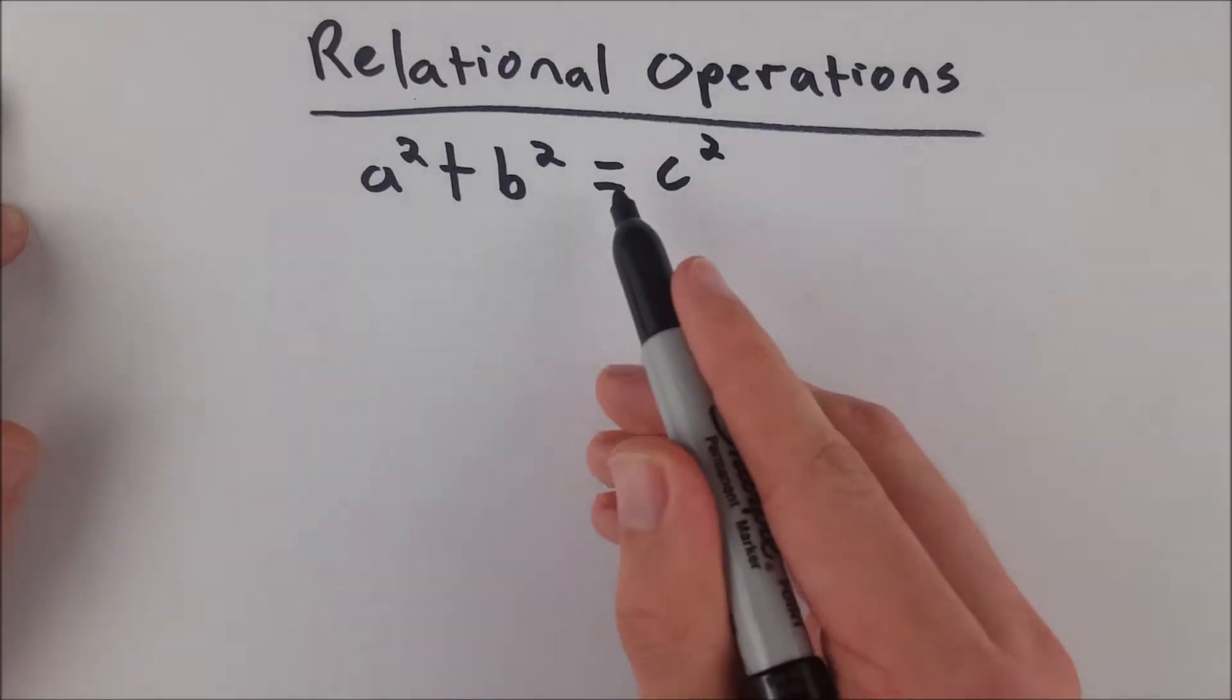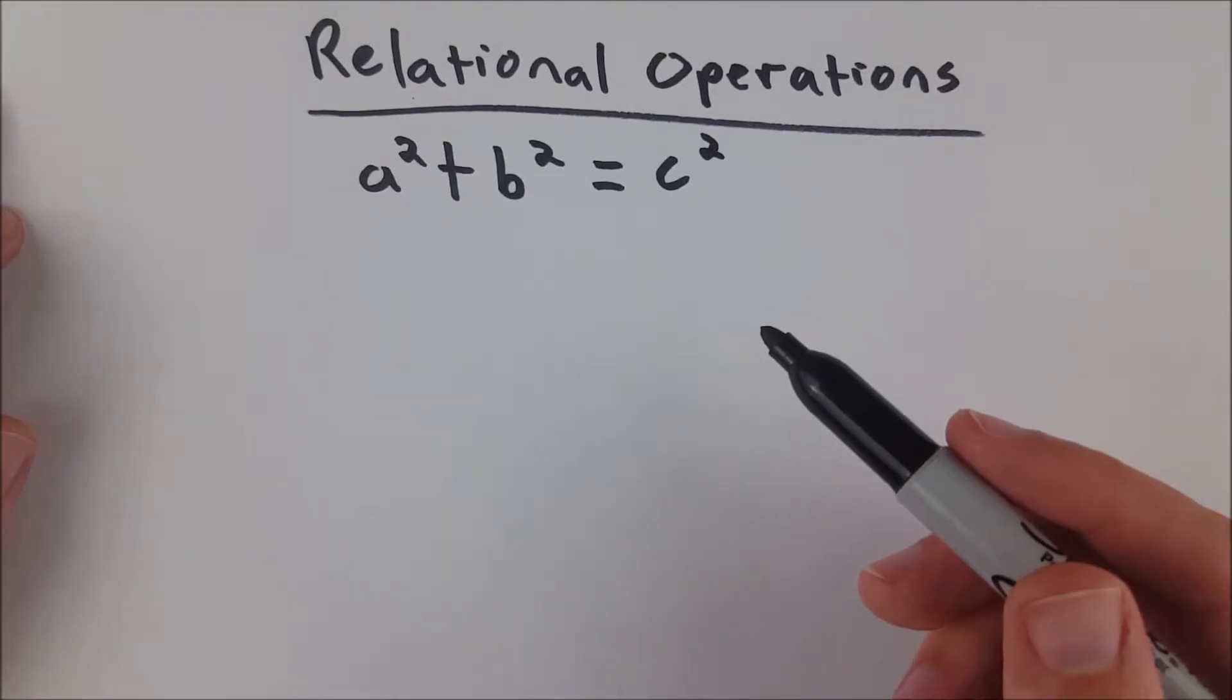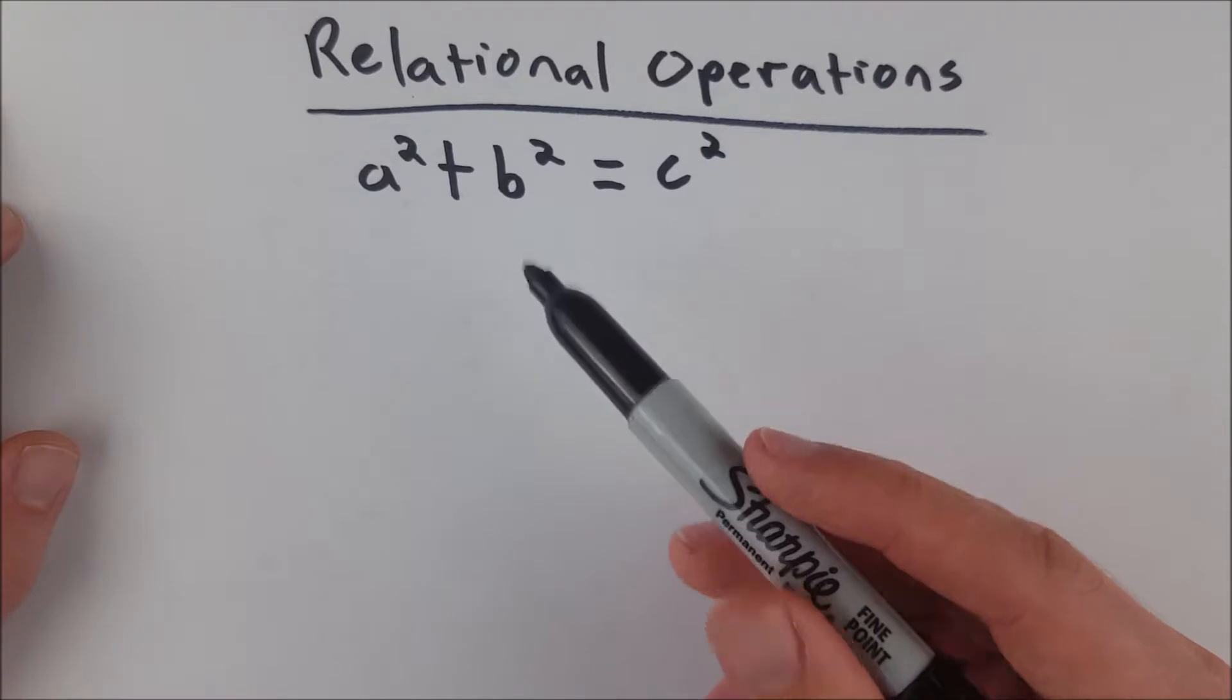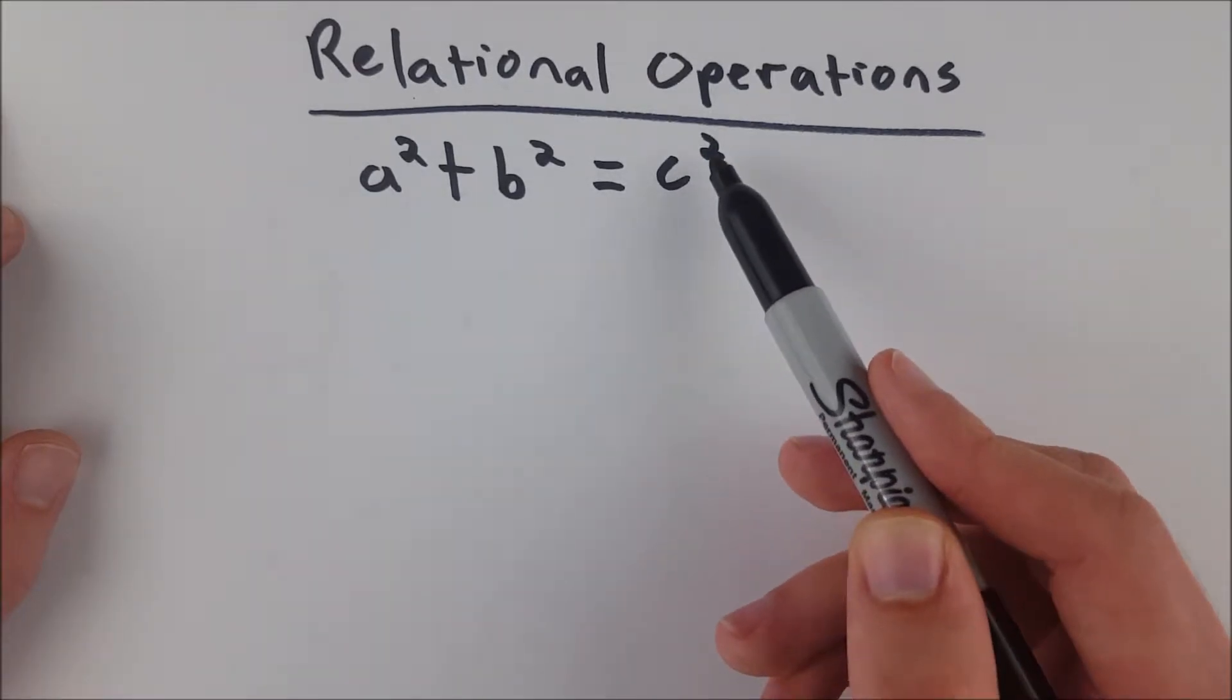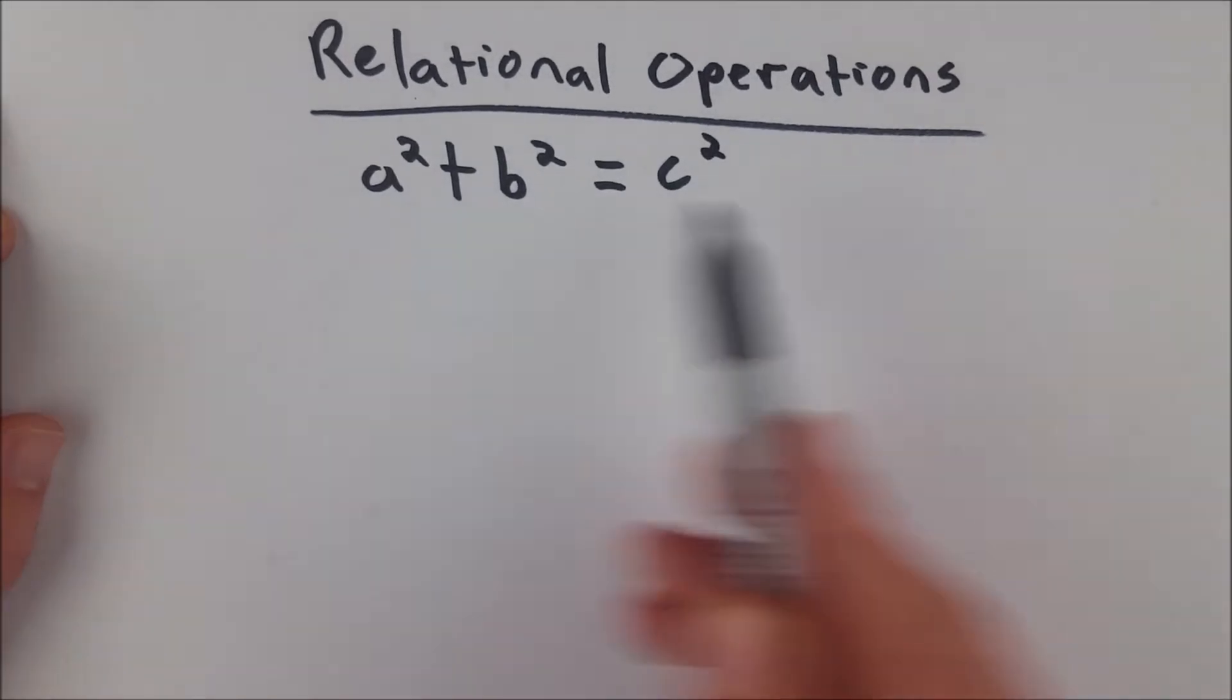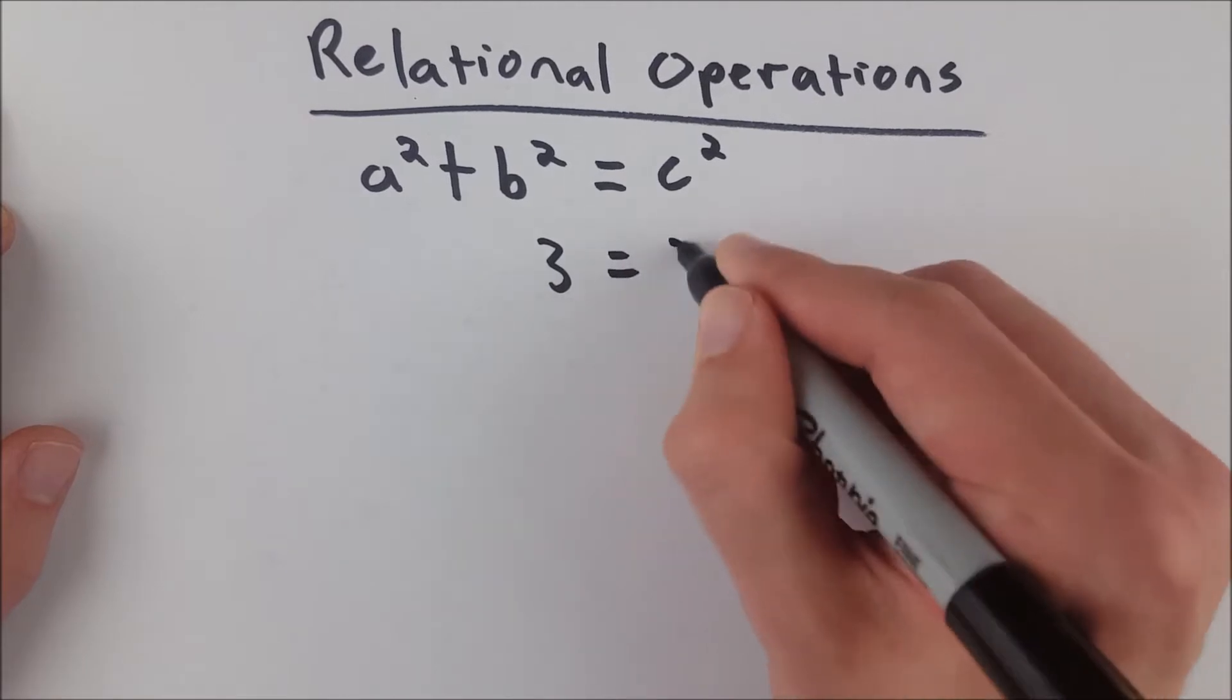And here equals is telling us, and of course if we know what these letters stand for in context of the Pythagorean theorem, it's telling us that the sum of the squares of the legs of a right triangle are equal to the square of the hypotenuse. This is a relation, the equals sign, that says these two quantities are the same. Of course three is equal to three.